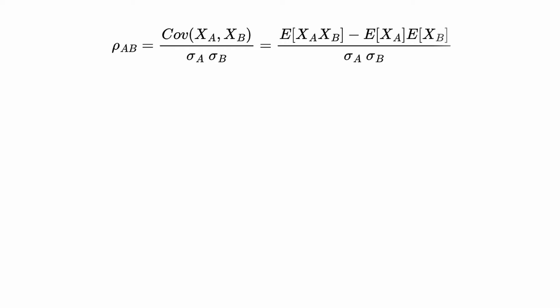As discussed earlier, the event of default is a binary event. Let's define a variable such that it's 1 when it defaults and 0 when it survives. And the default probability would be just the probability when the variable equals 1.